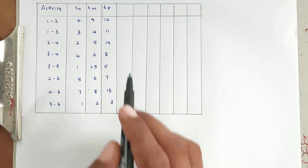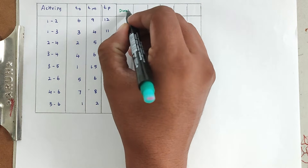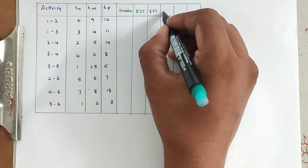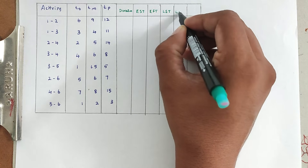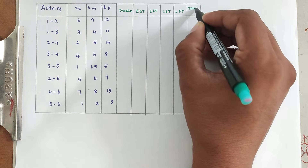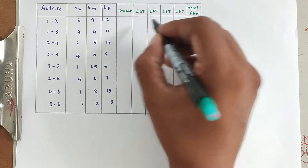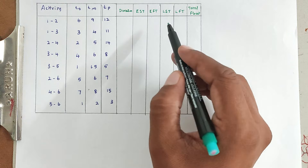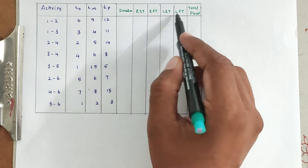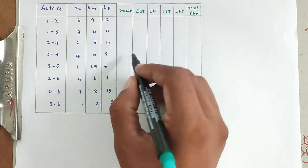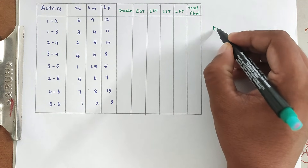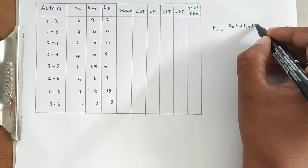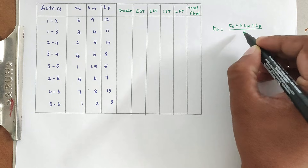We also need to find the total float. So we have to find: duration, EST, EFT, LST, LFT, and total float. The first step is to find the duration, then draw the network path, then find the critical path, and after that we can find all those values. The duration is calculated using the formula: TE (expected time) = (TO + 4·TM + TP) / 6.